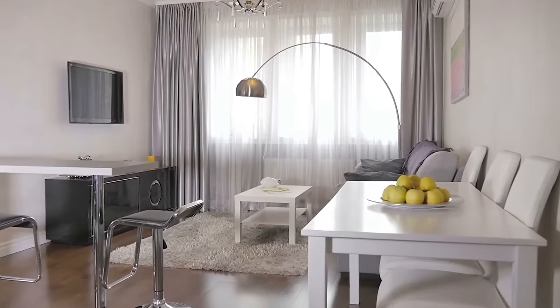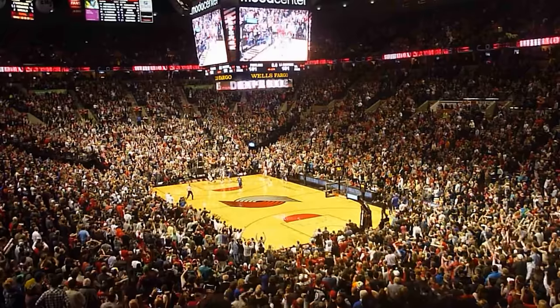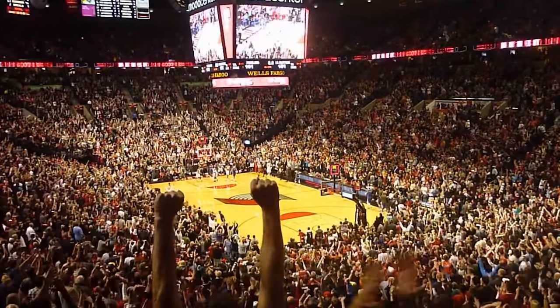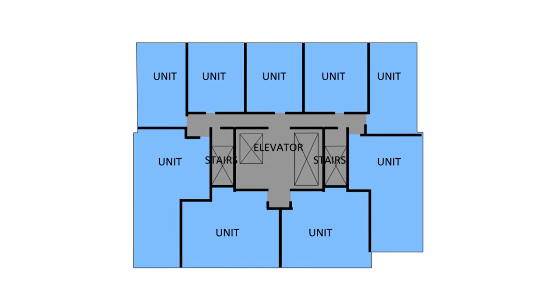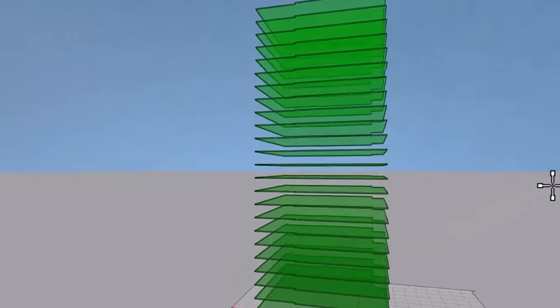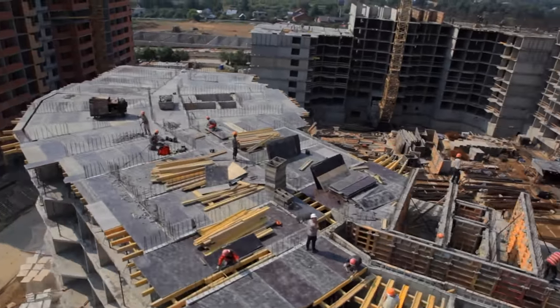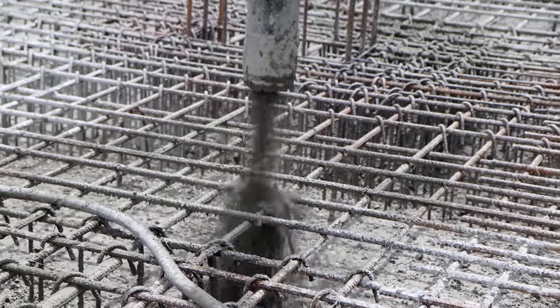Structural engineers work with architects to figure out what type of loading these spaces are going to experience. For example, an apartment is going to experience less load than a stadium packed full of people. Once we figure out the loads the floor spaces are going to experience — in our case these are apartment buildings, so residential loading — we need to design a skeleton that can take this load. For our case, this is going to be the floor system, using a concrete floor slab system reinforced with steel bars.